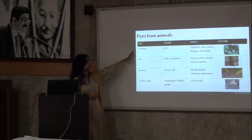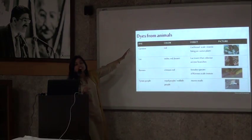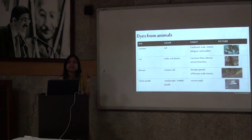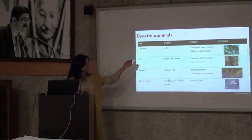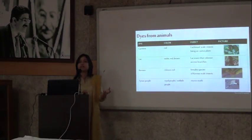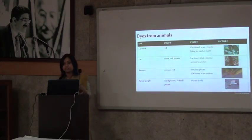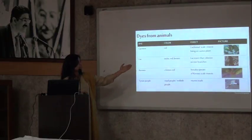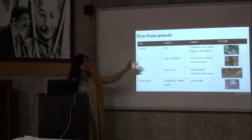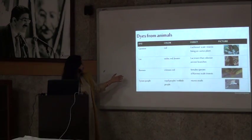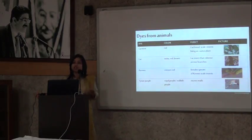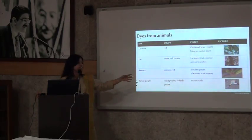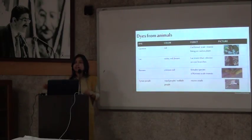Now, some examples of dyes derived from animals. Carmine is a red-colored dye derived from the cochineal scale insect living on cactus. You may have noticed cactus plants with those fungus-like white objects — that is the cochineal scale insect which colonizes these plants, and red-colored dye can be extracted from it. Similarly, lac insects give us lac, which is a violet-red or brown-colored dye. Kermes from the female species gives a crimson red. Tyrian purple, also known as royal purple, is an age-old dye derived from murex snails, which are killed and the dye extracted.